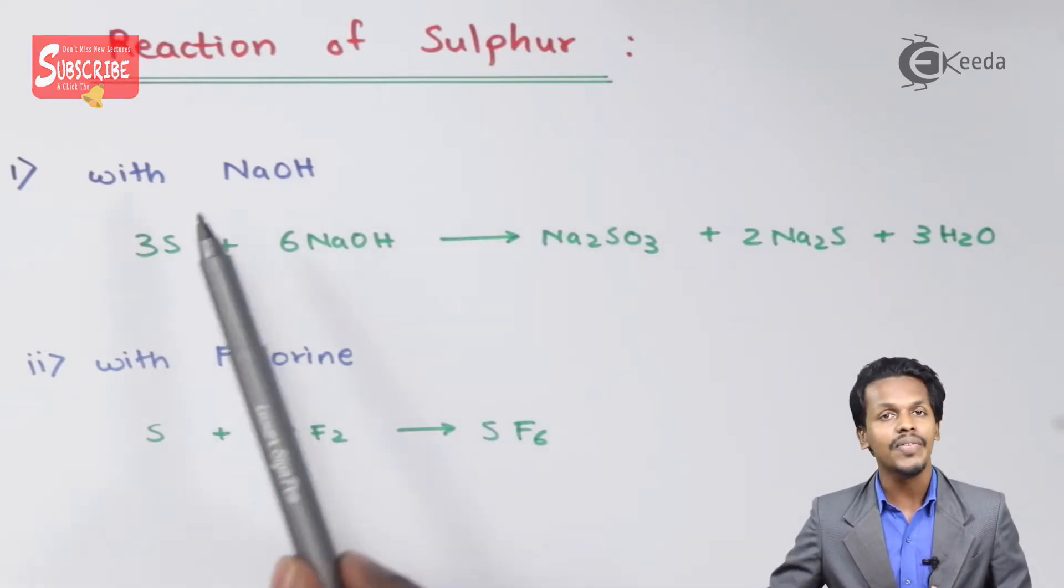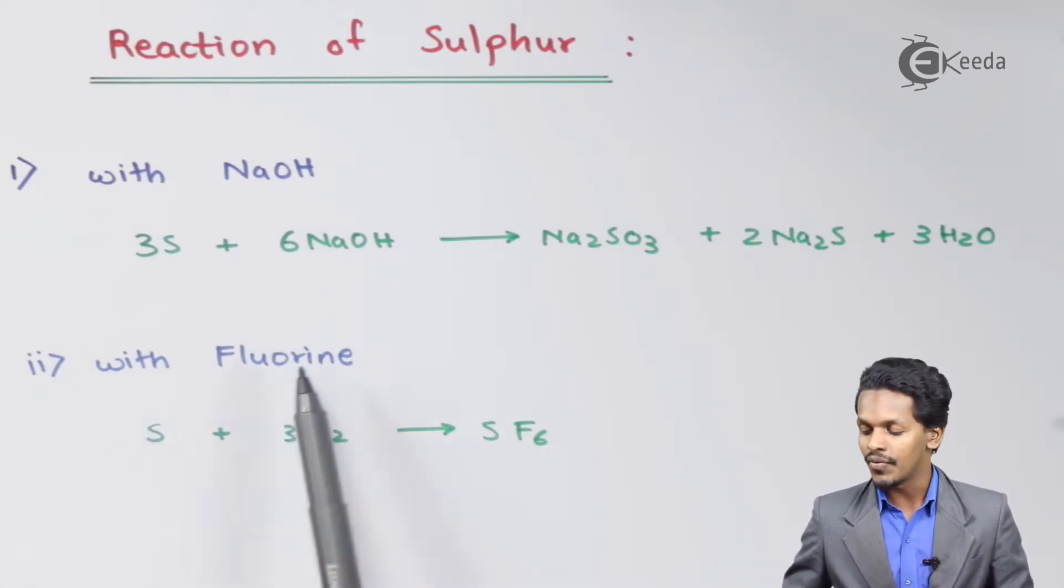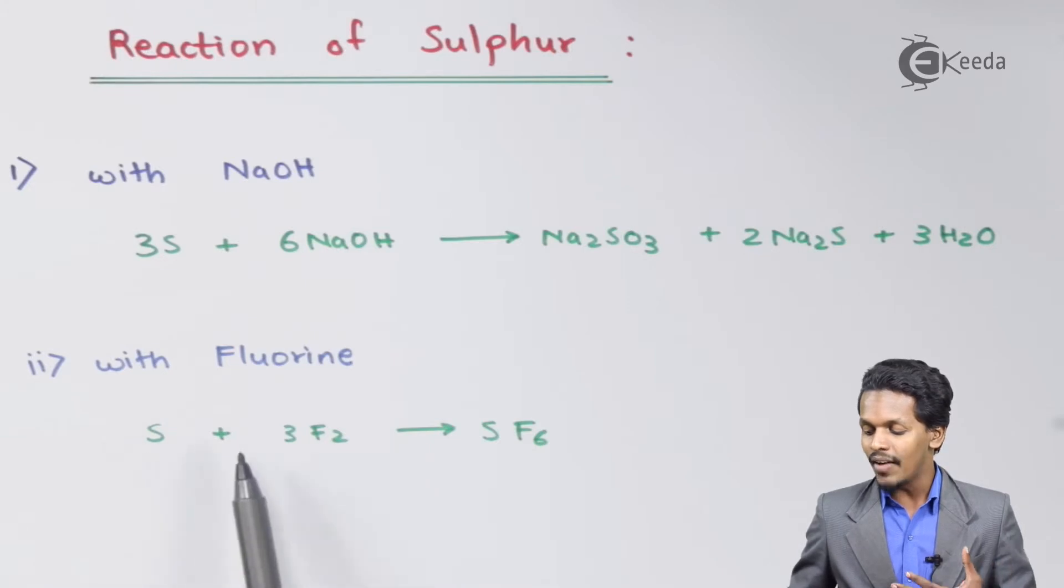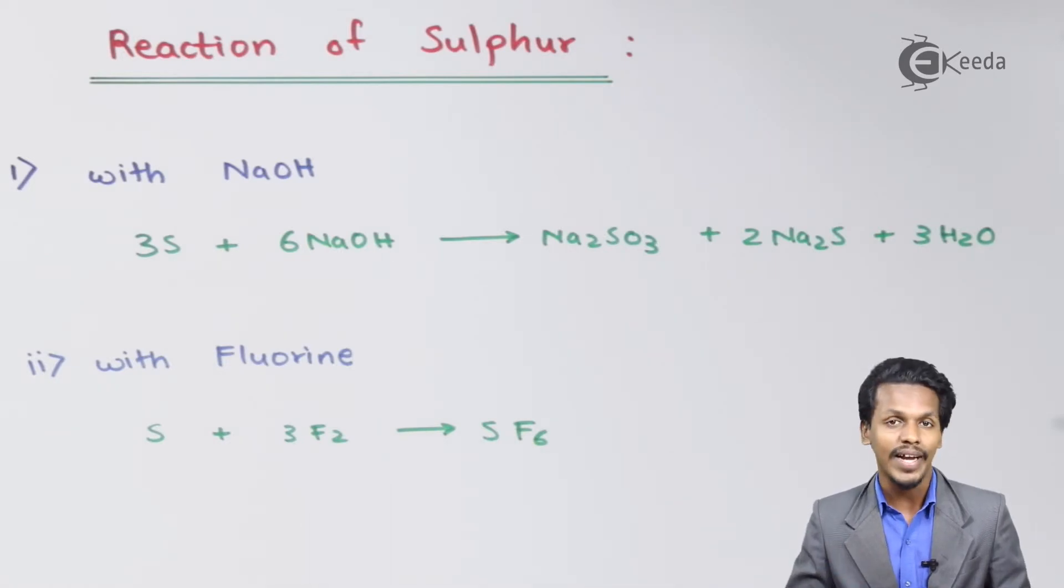So therefore this was the reaction of Sulphur with NaOH. Now let us move on to the next one, that is the reaction of Sulphur with Fluorine. So Sulphur, when it is reacted with 3 moles of F2, then the product that is formed is SF6, that is known as Sulphur Hexafluoride.